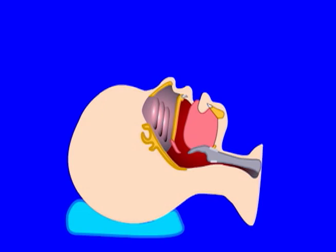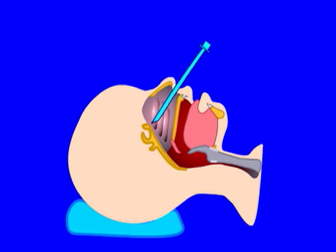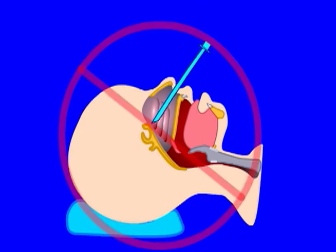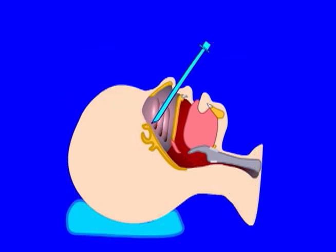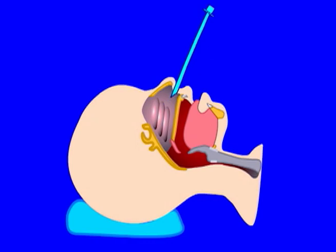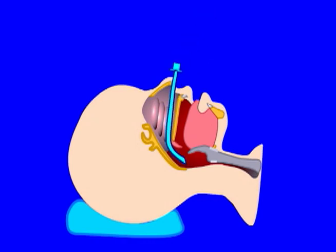Use gentle technique. Direction of insertion is very important. Don't thread the nasal airway upward toward the frontal sinus. Instead, advance it along the floor of the nose, perpendicular to the plane of the face.